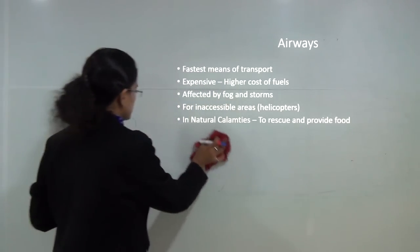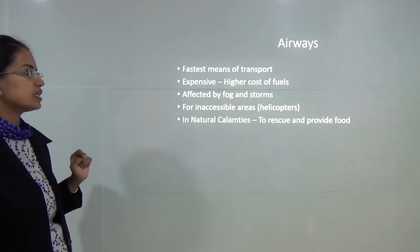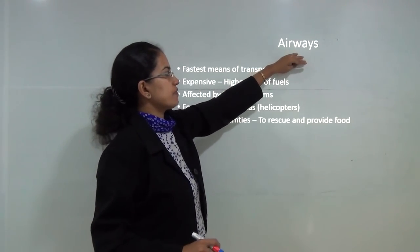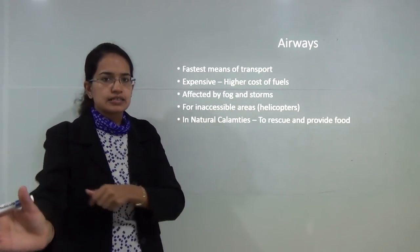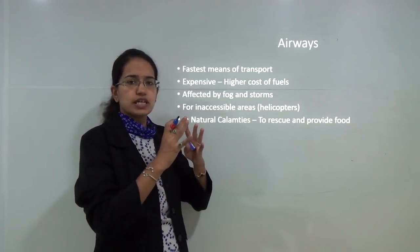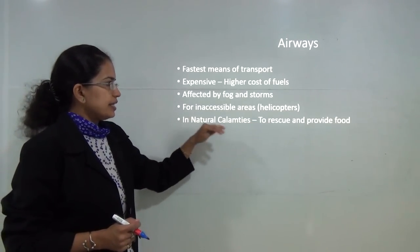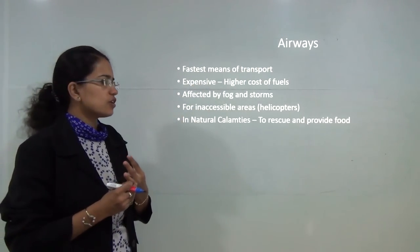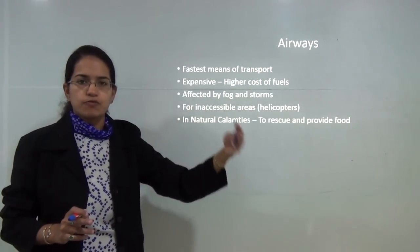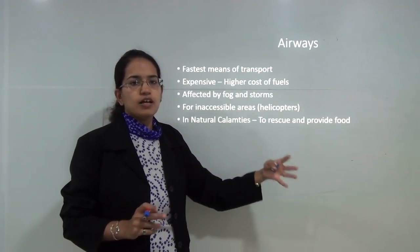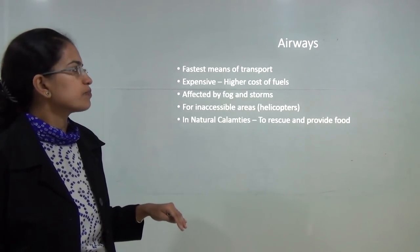Airways is the fastest means of transport but the most expensive, due to the high cost of fuel. Air transport is affected by fogs and storms, but it is a boon for inaccessible areas — helicopters can land on inaccessible terrains. Airways are also crucial during natural calamities such as earthquakes or cyclones, providing rescue, food, clothing and shelter, and transporting people from disaster areas.